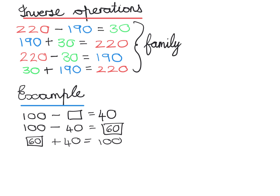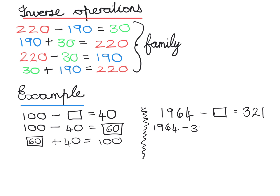Now I'm going to show you how this looks different with a larger number. What if I give you: 1964 minus what gives me 321? Is the answer jumping out at you now? Not really. But you remember what method your brain has to use — it must subtract the two numbers. So we take the bigger number and minus the smaller one, and that will give us the missing answer.